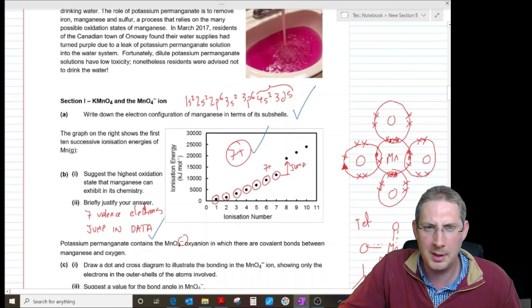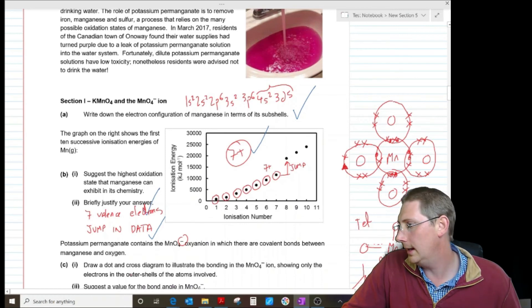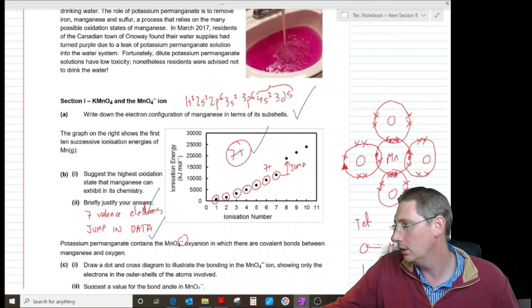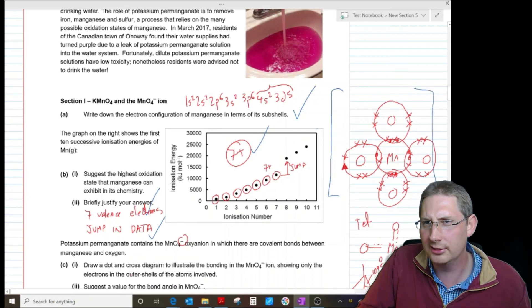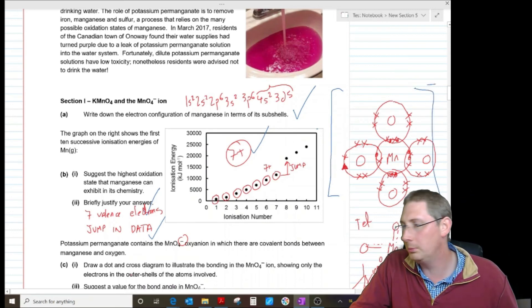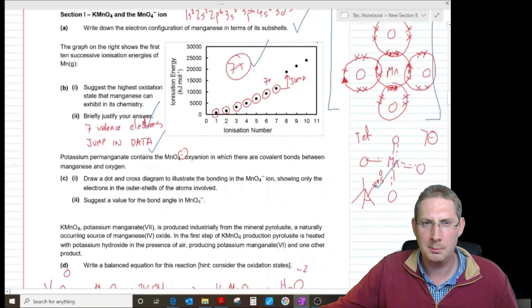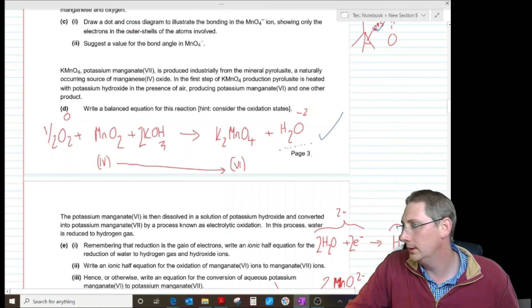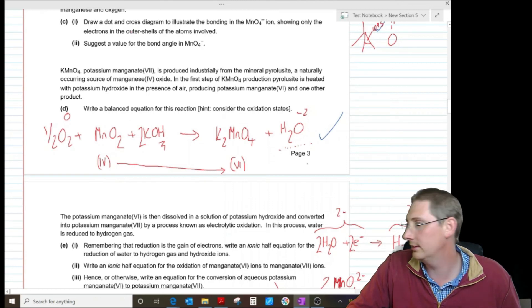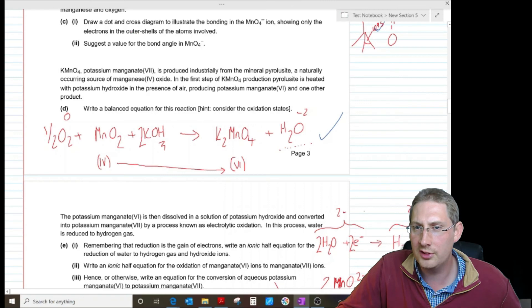Justify, jump in the data, yeah, just be a bit more specific than that. 7 valence electrons, yeah, absolutely, just be a little bit more than that. Dot cross diagram. What I didn't do was I didn't have the brackets. So I should have put brackets around that and given a minus. So I might have only got one mark out of two there. But it was tetrahedral with a bond angle of 109.5. Balanced equations for the reactions. This was absolutely right. Half an oxygen plus two KOH plus manganese dioxide forming two lots of potassium manganate six and water. Absolutely. Half quantities accepted. Don't penalise the lack of state symbols. Half equation for the reduction of water. Absolutely fine.